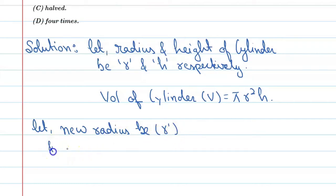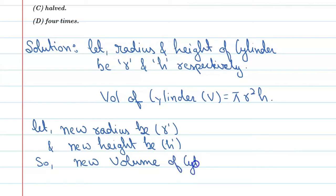And new height be h prime. Alright, so what will be the new volume for us? So new volume of cylinder be V prime. So you can say π r prime squared into h prime.